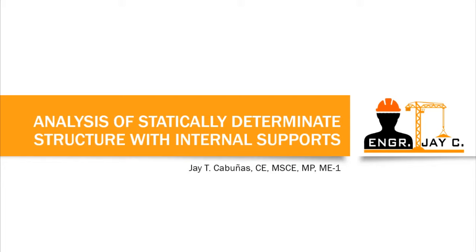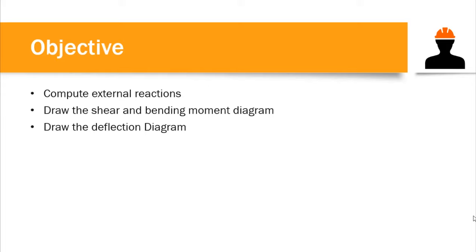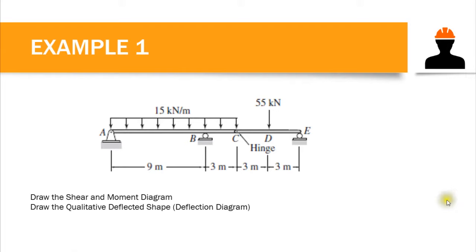What makes this lesson unique from the previous discussion is that we will include internal supports such as internal hinges and internal rollers, and also estimate the deflection diagram by just looking at the moment diagram. Unlike the previous lesson in strength of materials where we only dealt with external supports and external loads, the objectives here are: computing external reactions, drawing the shear and bending moment diagram, and drawing the deflection diagram of the beam.